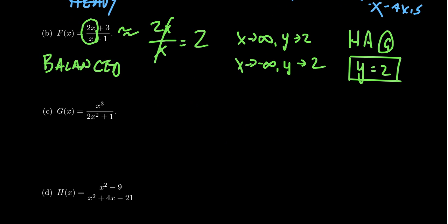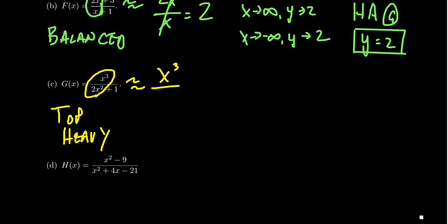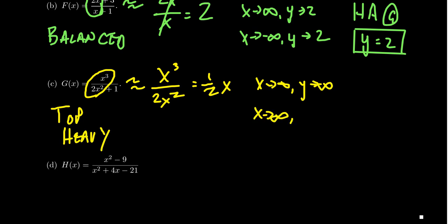Next, let's do g of x, which is an example of a top-heavy rational function. The top degree is bigger than the bottom. Looking at the end behavior, this will be approximately x cubed over 2x squared, which simplifies to one half x. So as x approaches infinity, y approaches infinity as well, and as x approaches negative infinity, y approaches negative infinity. In this situation, the horizontal asymptote does not exist — it doesn't have one because it was top-heavy.